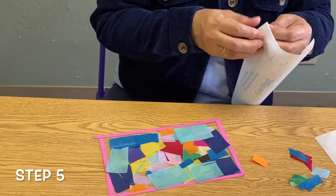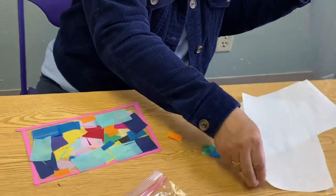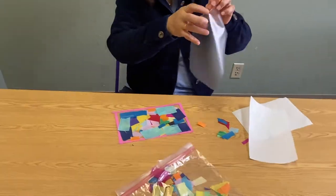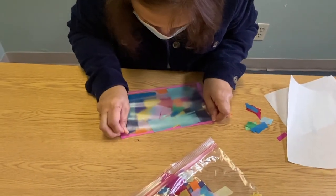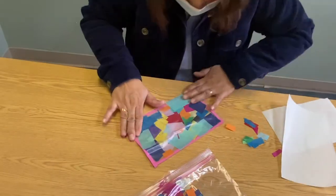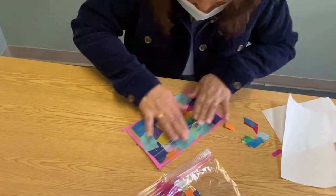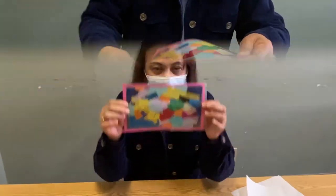Step 5. Take the backing off of the second piece of contact paper and stick it over the tissue, sticky side facing the tissue paper. Make sure all the sides line up.